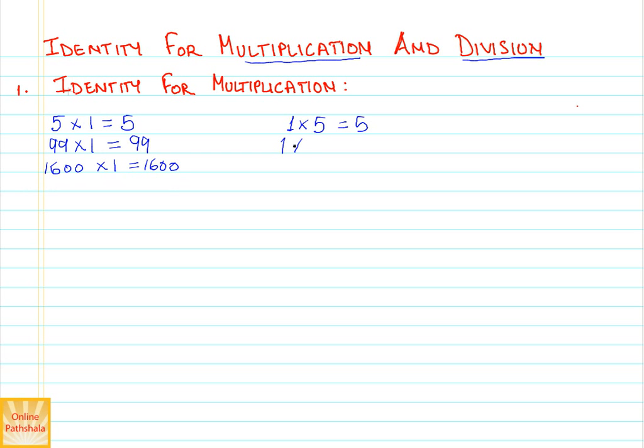Then, when I say 1 multiplied by 99, I still get 99 as the result. And similarly, when I multiply 1600 with 1, I still get 1600.